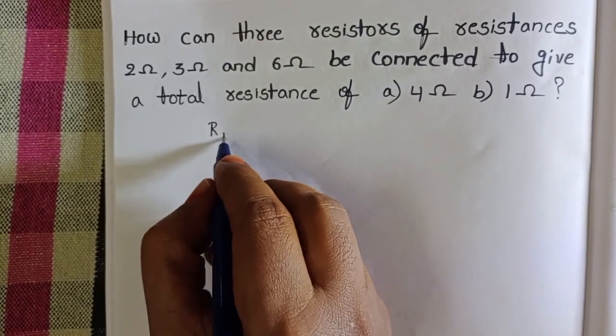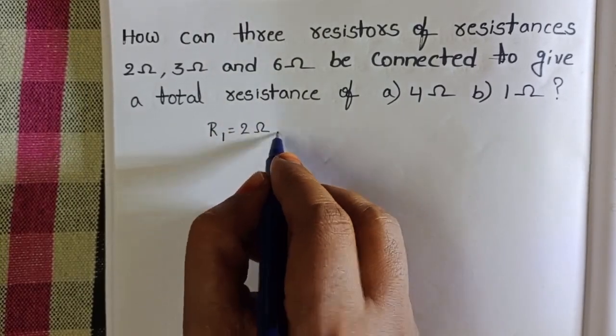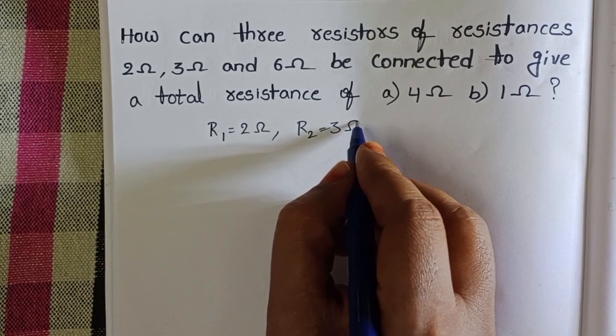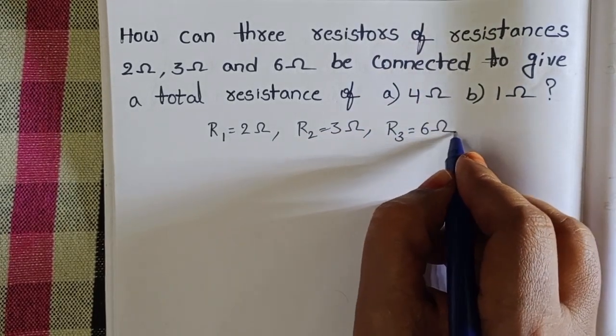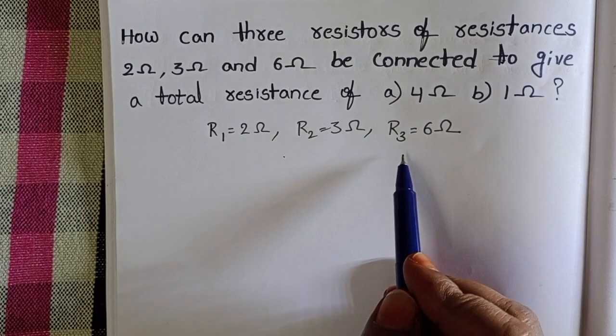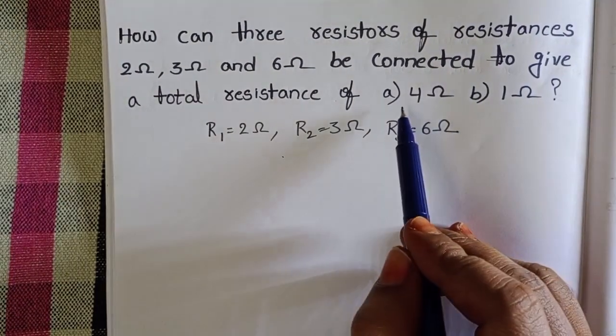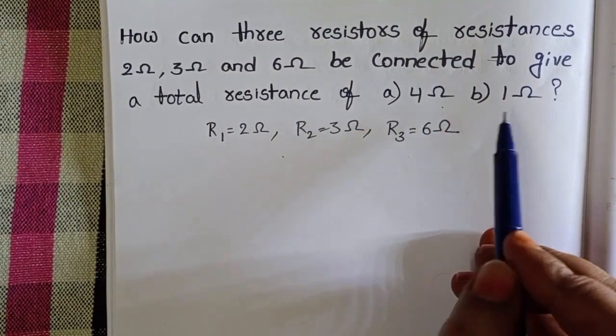Let us take the given resistors. R1 is equals to 2 ohms, R2 equals to 3 ohms and R3 is 6 ohms. These are the given resistors. By using these three resistors, we have to get the total resistance 4 ohm and 1 ohm.